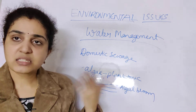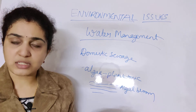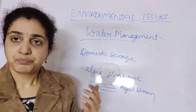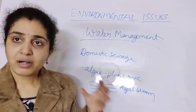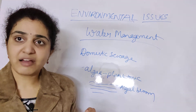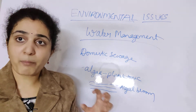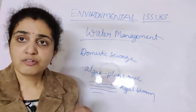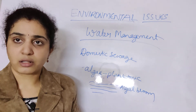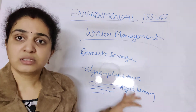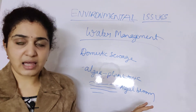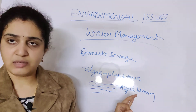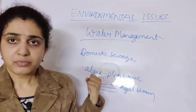The algal bloom does not allow indigenous flora and fauna to grow. When it grows, proper nutrients and sunlight are not available to the fish and plants in the water. This is a dangerous mechanism associated with domestic sewage.